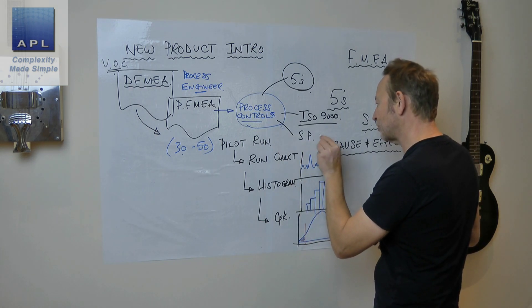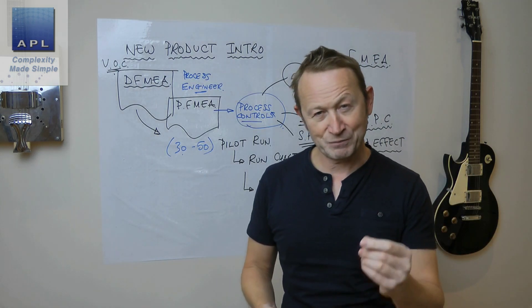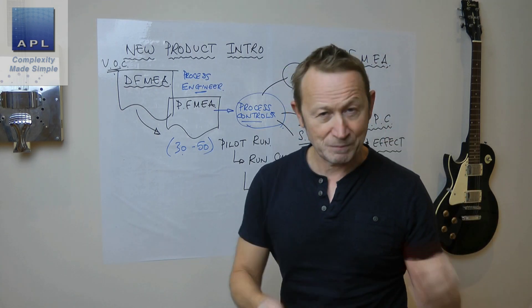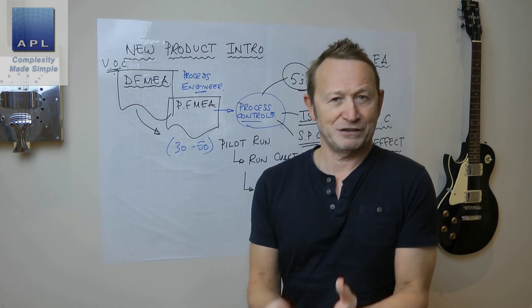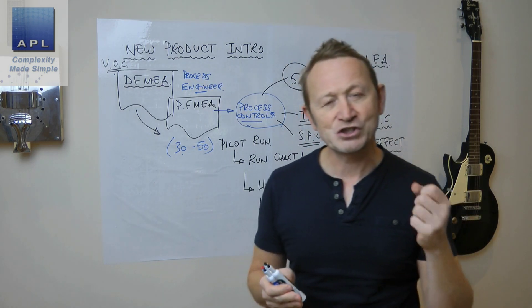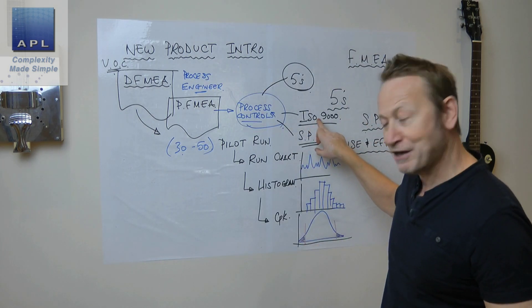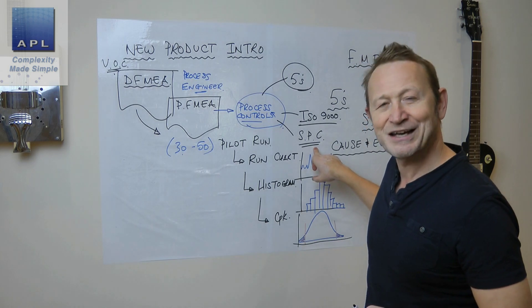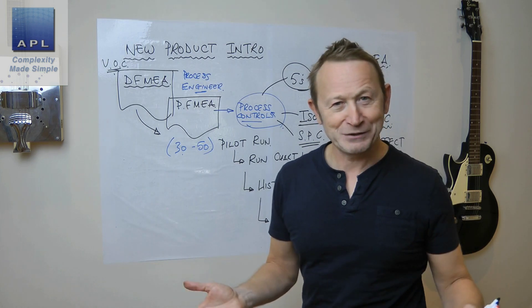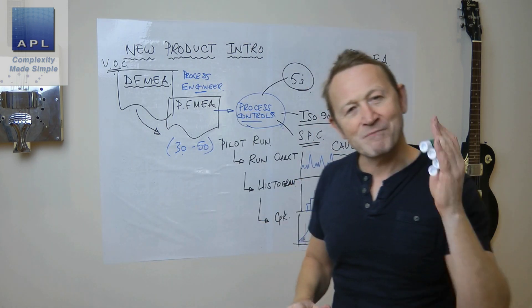I'm also going to use statistical process control because I can't understand my process properly without SPC. I can't set the process up properly and effectively without SPC. SPC is a fundamental, it is not a nice to have. I know that in ISO 9000 it says use this if applicable.